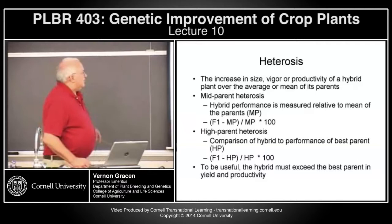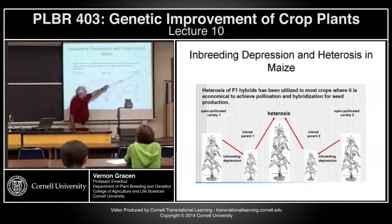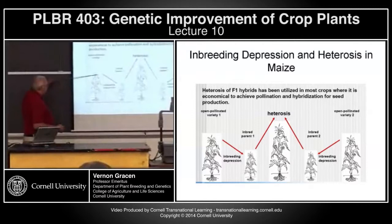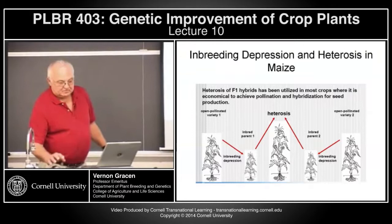To summarize: if you started with that open-pollinated variety and selfed it, you get inbreeding depression. Then you cross it to an inbred parent from a different open-pollinated variety, and you get heterosis. Graphically, you get inbreeding from the open-pollinated variety — performance goes down — but the hybrid comes back up above the performance of those open-pollinated varieties.